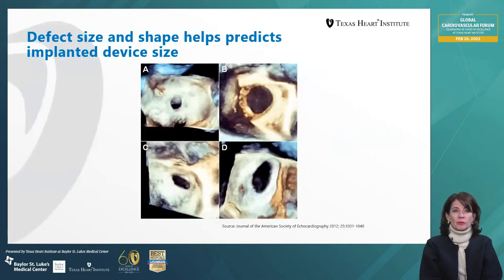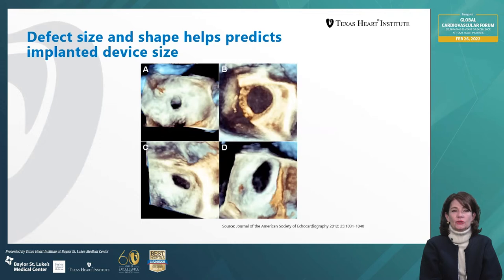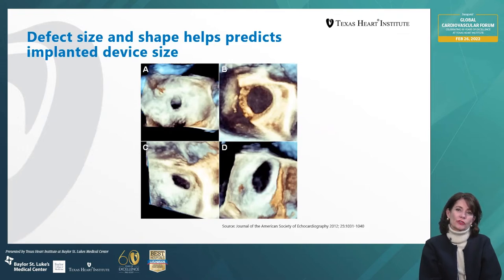We can size the ASD by TEE with 3D, by CTA, or by MRI. Real-time imaging in the cath lab is available only by TEE, and you can see that the defects have unique shapes — some round, some elliptoid, some distorted — and these distortions are related to the pressure differential that exposes the interatrial septum to different forces.